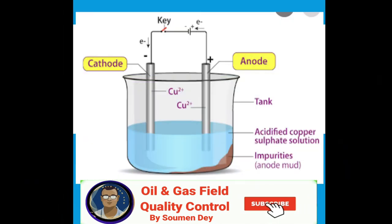Now let us discuss some basic popular terminologies we will be using while discussing cathodic protection. What is an anode? An anode is an electrode through which the positive electric charge flows into a polarized electrical device.